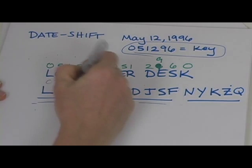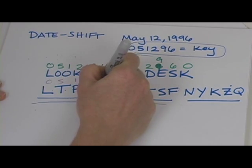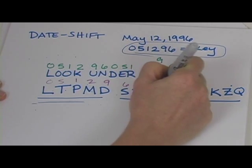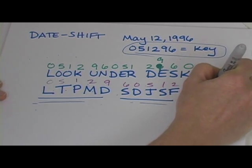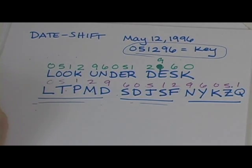And then I would say 0, 5, 1, 2, 9, 6, 0, 5, 1, 2, 9, 6, 0, 5, 1, okay.